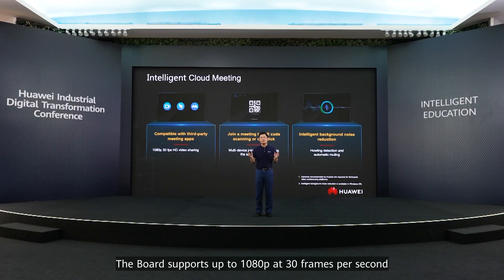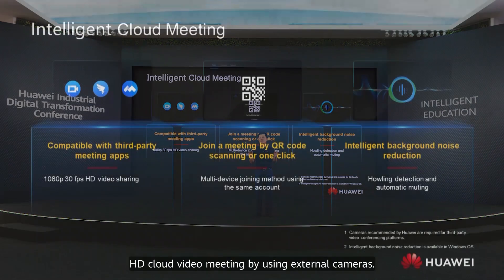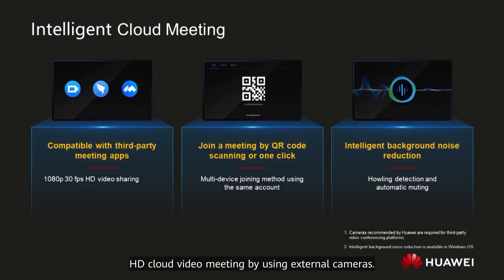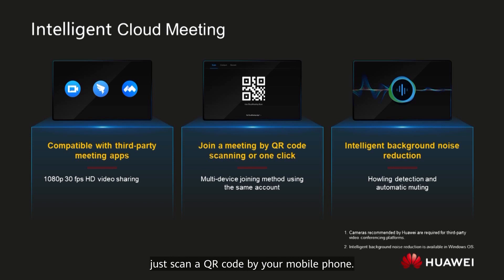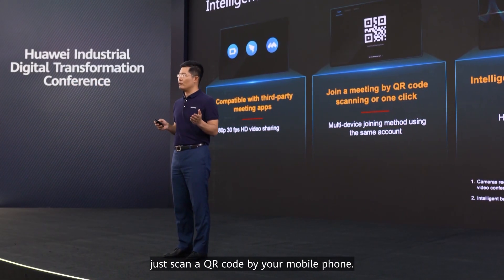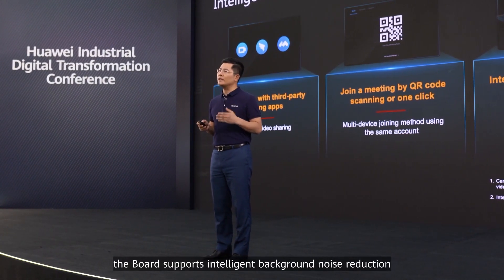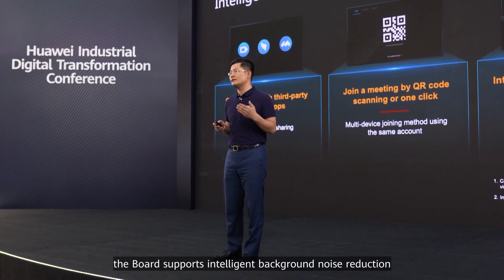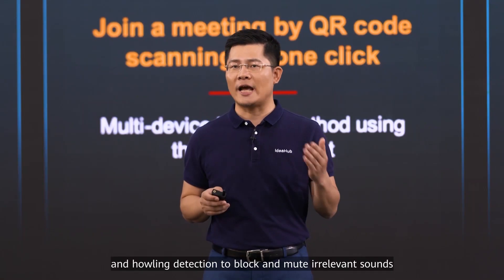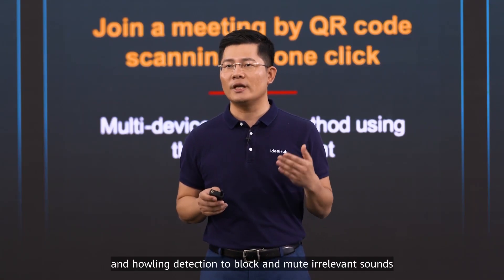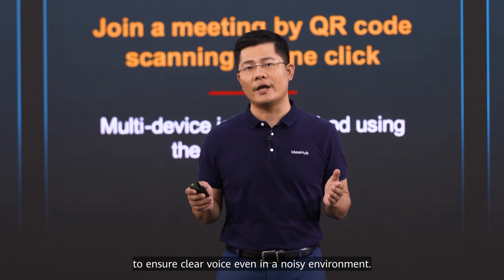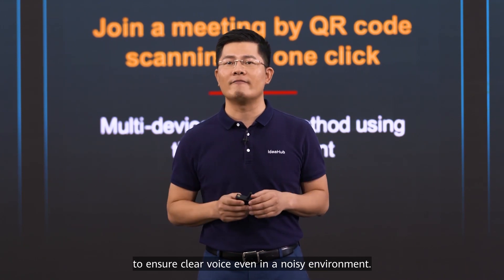The board supports up to 1080p at 30 frames per second HD cloud video meetings. By using an external camera, you can join a meeting and add it as easily as scanning a QR code with your mobile phone. Adopting a deep learning algorithm, the board supports intelligent background noise reduction and howling detection to block and mute irrelevant sounds, ensuring clear voice even in a noisy environment.